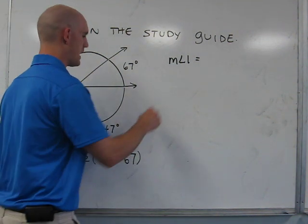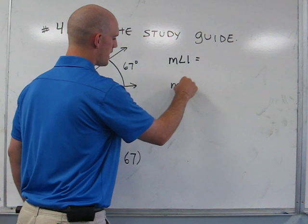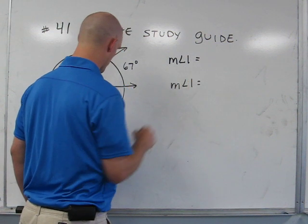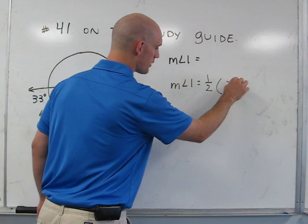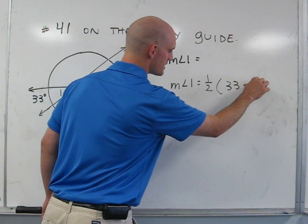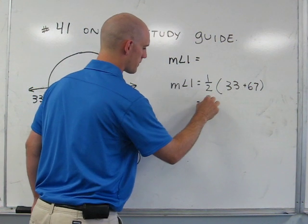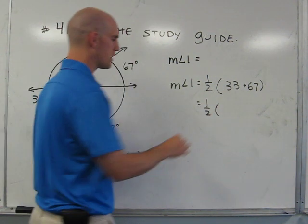Using these two pieces of knowledge, we can say that the measure of angle 1 is equal to one-half the sum of 33 and 67, which is one-half of 100, meaning that the measure of angle 1 is 50 degrees.